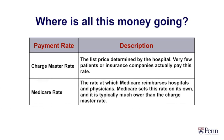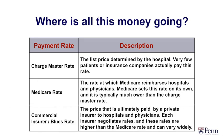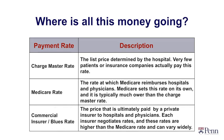Medicare takes all those DRGs and says this is how much we're paying for each DRG. A third rate is the commercial insurer and Blue Cross rate — what private insurers pay. It's typically higher than the Medicare rate. Commercial insurers negotiate separate rates with hospitals, so there's not one commercial rate but many different commercial rates.